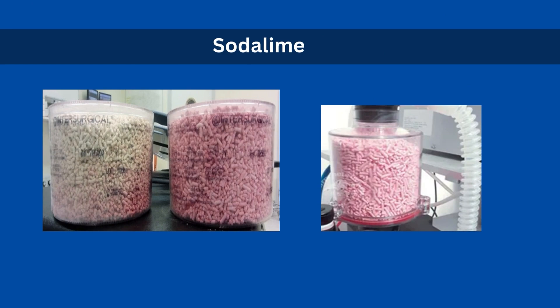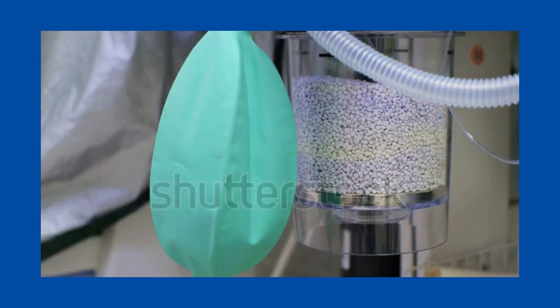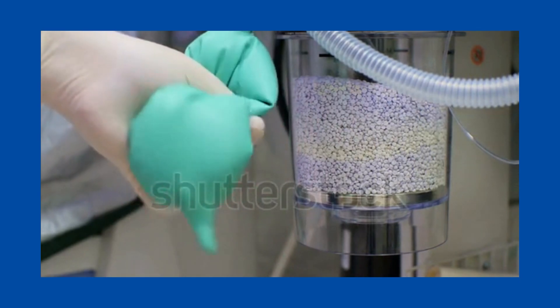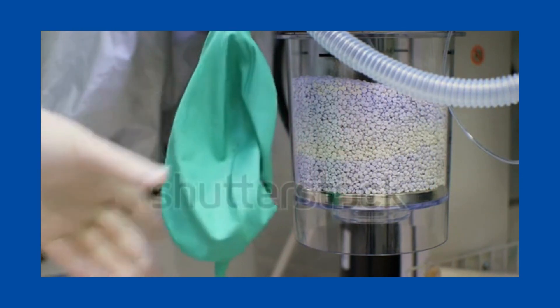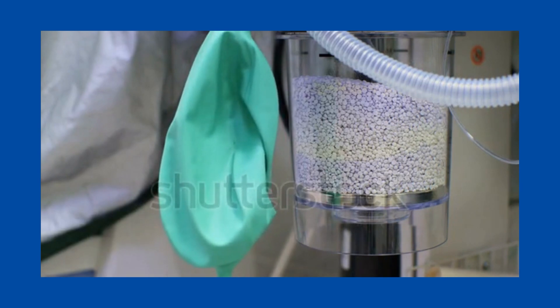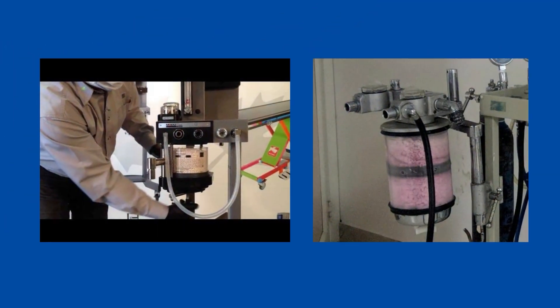Last but not least, the safety features of the scavenging system. We have a container of soda lime in the anesthesia machine that traps all the carbon dioxide exhaled by the patient. 24 liters of carbon dioxide exhausts one gram of soda lime. It is usually pink in color, and when it changes color, it indicates that the soda lime is exhausted and needs to be replaced to work properly.